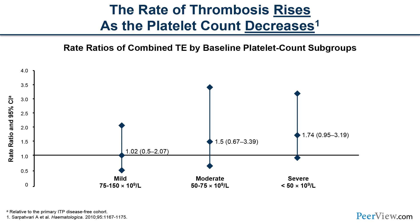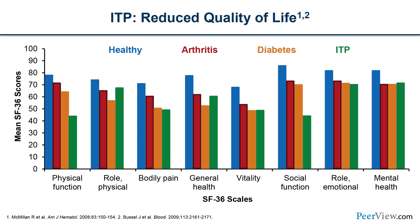Third, and probably less well appreciated, is that quality of life is decreased in ITP patients — probably more so than in arthritis or diabetic patients. An SF-36 scale published by Dr. Bussel showed that ITP patients had reduced physical function and social function compared to arthritic and diabetic patients. When you talk to your patients with ITP, don't dismiss their complaints of fatigue. It's not all in their heads — this is a common complaint that needs to be respected.